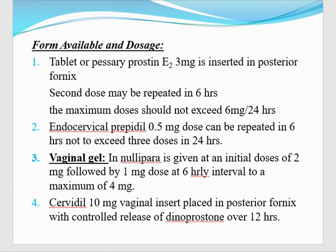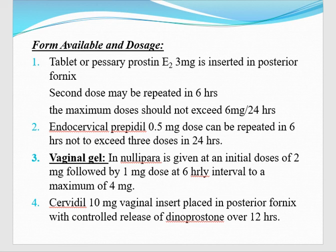The available forms and dosage of prostaglandin E2: it is available as a tablet or pessary. Prostin E2 3 mg is inserted in the posterior fornix. For the second dose, we have to repeat it 4 to 6 hourly. The maximum we can give is 2 doses in 24 hours. After the second dose, if the patient is still not in labor, it is a failed induction. Cervical prepidil gel is available at 0.5 mg, can be repeated 6 hourly, not to exceed 3 doses in 24 hours.